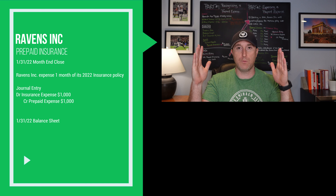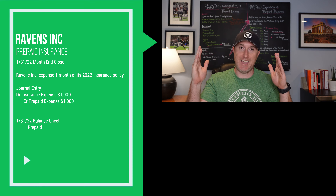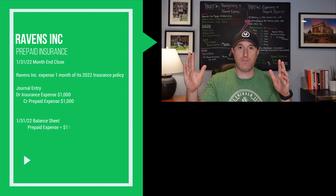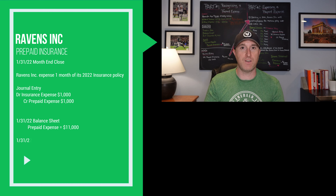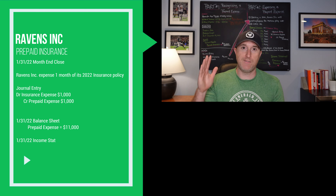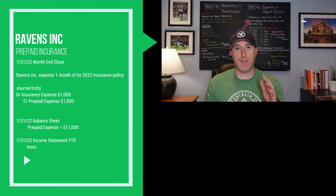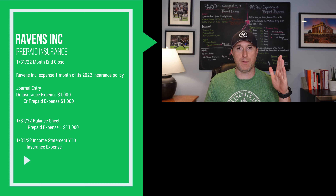What I'm effectively doing is taking $1,000 from my balance sheet and putting $1,000 on my income statement. At the end of January 31st, 2022, when I look at my financial statements, I'm going to have $11,000 of prepaid insurance left and $1,000 of insurance expense on my income statement.